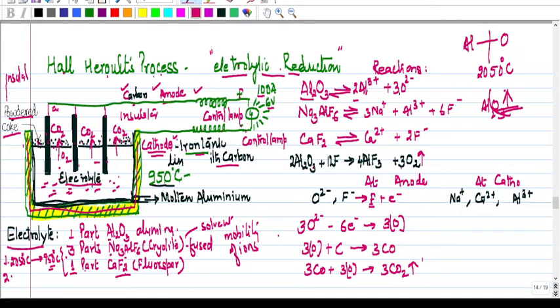Now let's take up the reactions. If we see the reactions, then see alumina when we electrolyze it breaks into aluminum ions and oxide ions: 2Al³⁺ and 3O²⁻. So 3 oxide ions and 2 aluminum cations. Now cryolite will break into sodium ions, aluminum ions and fluoride ions. Then you break calcium fluoride into calcium ions and fluoride ions.